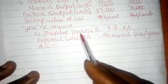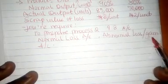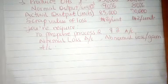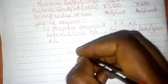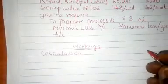We are to prepare the process 2 and process 3 accounts, and the normal loss accounts. Let's quickly look at the question. We are going to prepare a process 2 account, but we need to do some workings. The working is the calculation of cost per unit — for each process, we need to calculate the cost per unit.